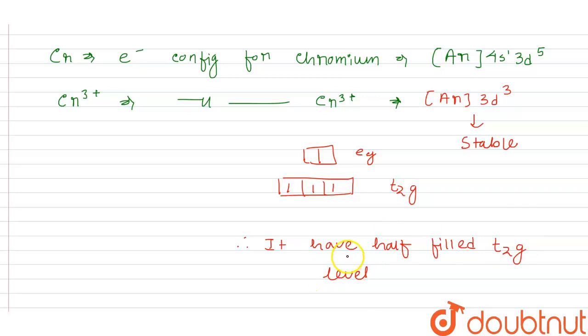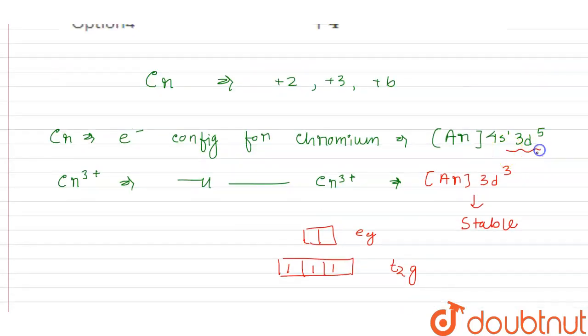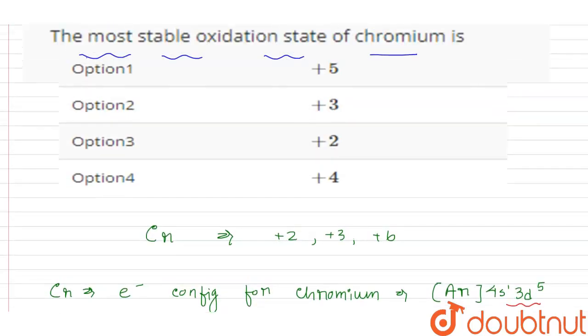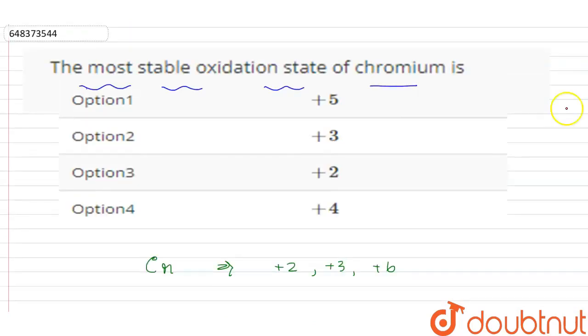Which is more stable than d⁵, and there is no just d⁵ configuration. So the most stable oxidation state of chromium will be option number 2, that is +3. Thank you.